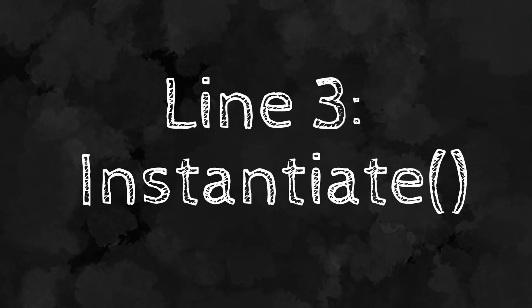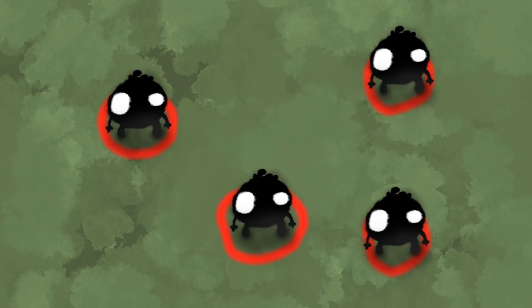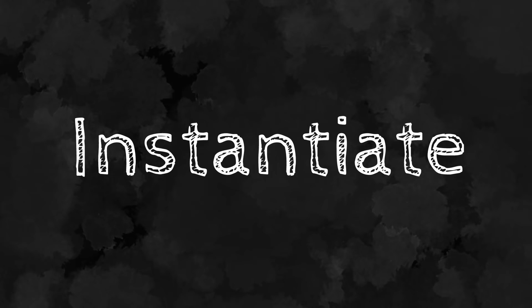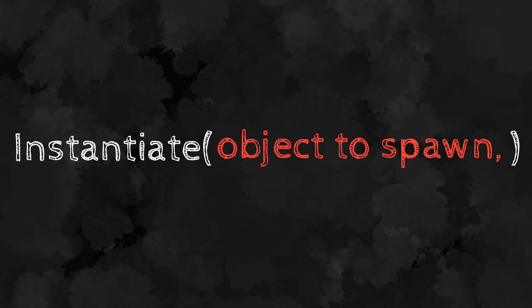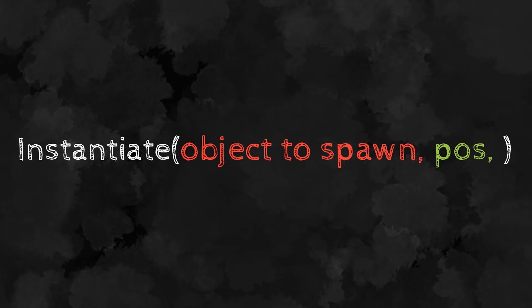Line number three is Instantiate. This super useful line lets us spawn GameObjects from within our script. The syntax is simple: type Instantiate, then give it three parameters — the GameObject you want to spawn, the position at which to spawn it, and the rotation you want to give it. End the line with a semicolon.